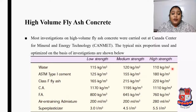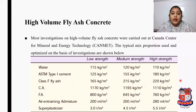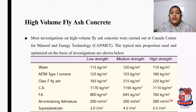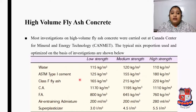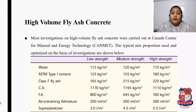For high strength concrete, water is 110 kg/m³, ASTM Type 1 cement is 180 kg/m³, Class F fly ash is 220 kg/m³, coarse aggregate is 1110 kg/m³, fine aggregate is 760 kg/m³, air-entraining admixture is 280 ml/m³, and super plasticizer is 5.5 litres/m³ — giving high strength. All these data are based on the investigations, so don't get confused about how these strength values are derived.